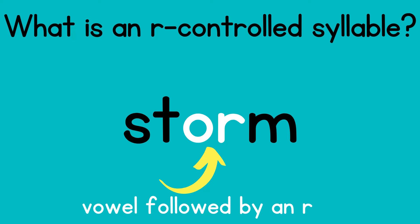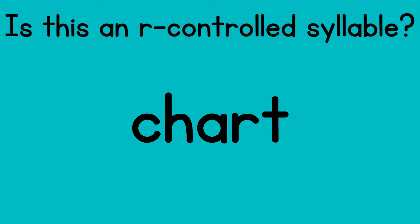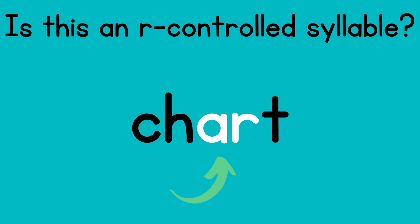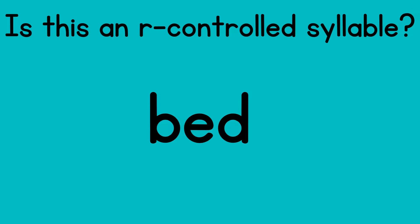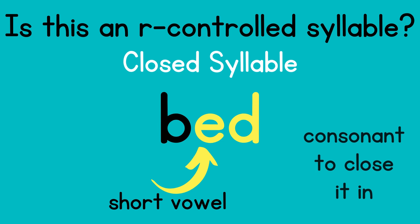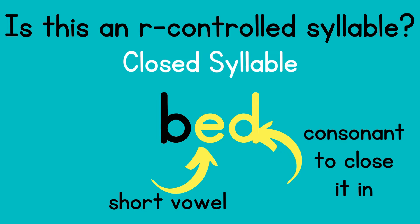Let's look at some R-controlled syllables. 'Storm' is an R-controlled syllable because it has a vowel followed by an R — O and R say 'or.' Is 'chart' an R-controlled syllable? Yes it is, because the vowel is followed by an R to say 'ar.' Is 'bed' an R-controlled syllable? If we look at the vowel E, we don't see an R after it, so no, it is not an R-controlled syllable.